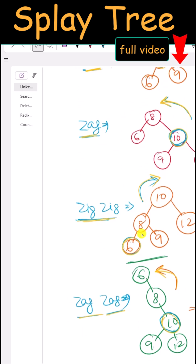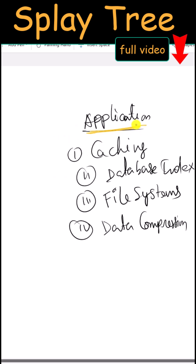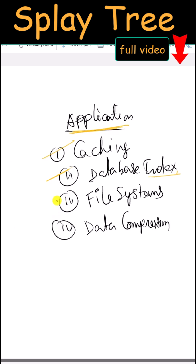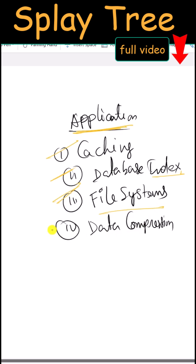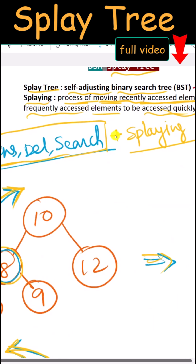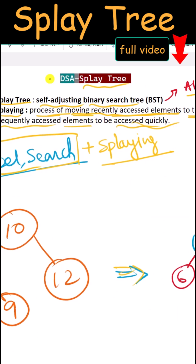These are all the different rotations used in the splay tree. The splay tree has many applications, including caching, database indexing, file systems, and data compression.